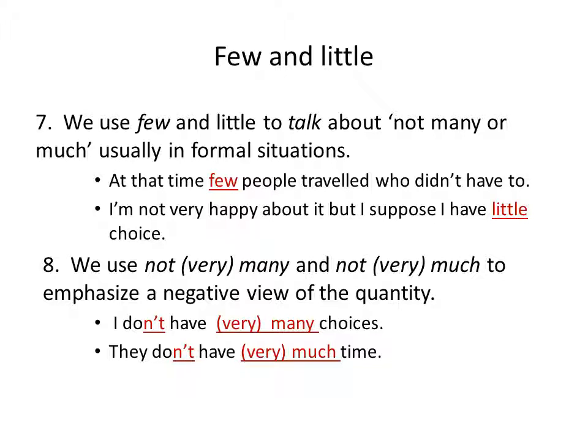Few and little. We use few and little to talk about not many or not much, usually in informal situations. For example: 'At that time, few people traveled who didn't have to.' 'I'm not very happy about it, but I suppose I have little choice.' We use not very many and not very much to emphasize a negative view of quantity. For example: 'I don't have very many choices.' 'I don't have very much time.'